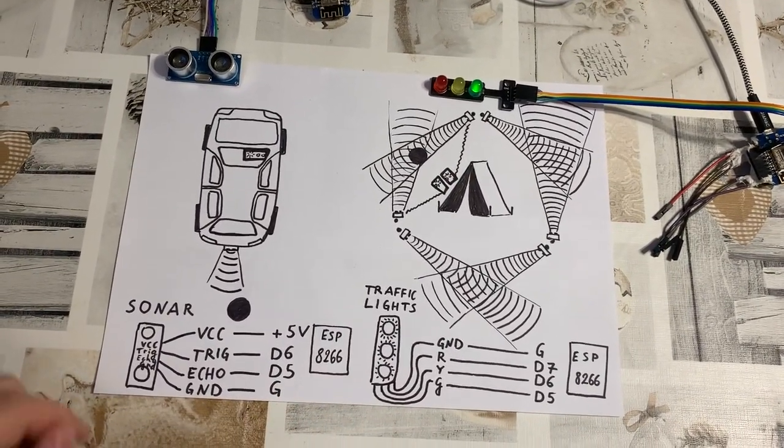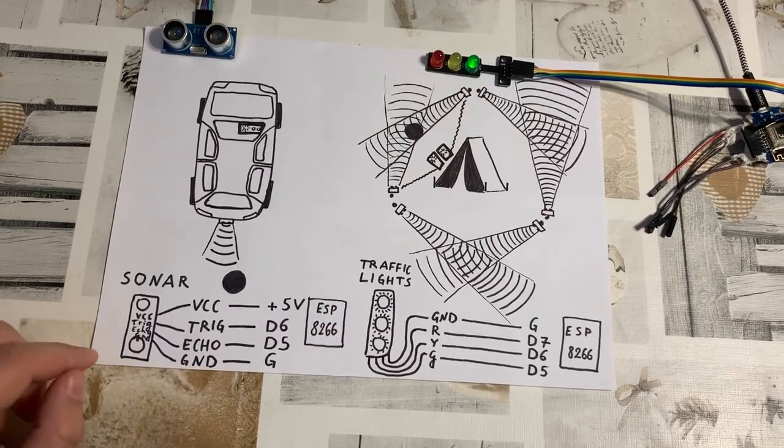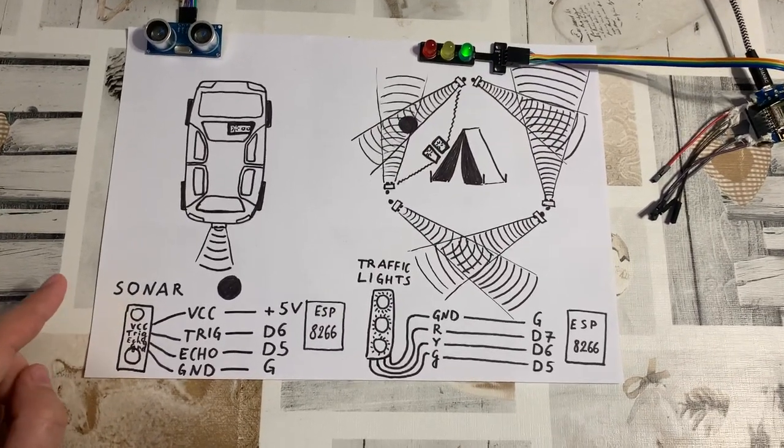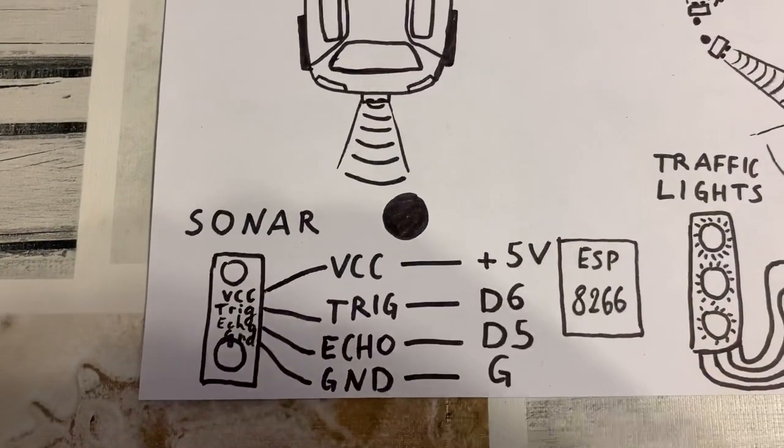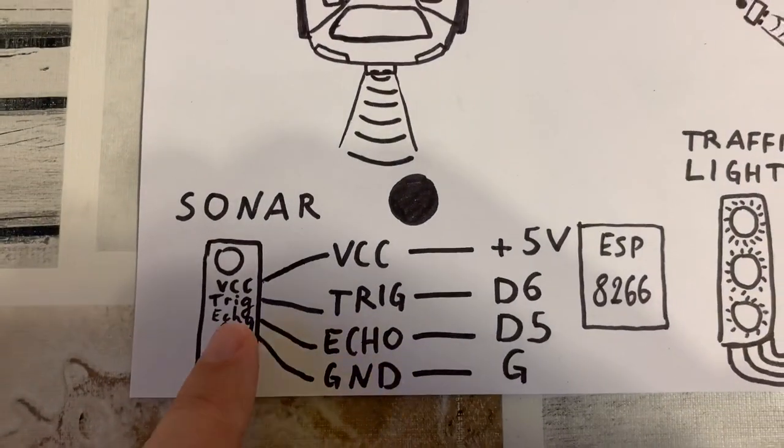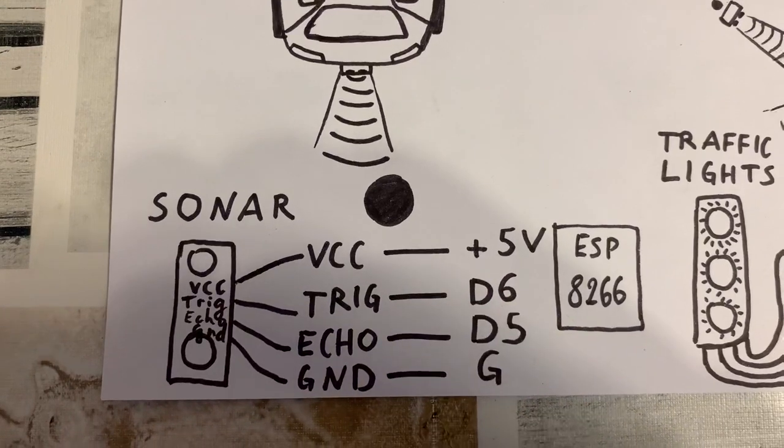You wire it up very simply. In the sonar module the VCC pin is connected to the plus 5V of the ESP, the trigger pin is connected to D6.